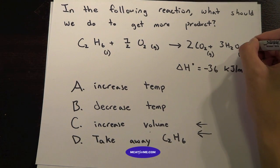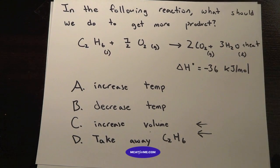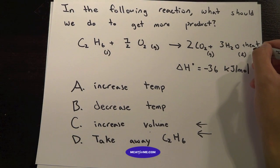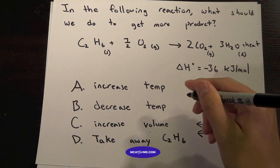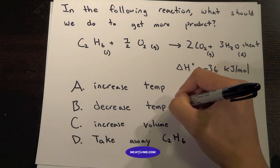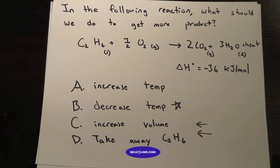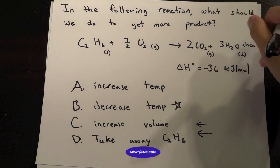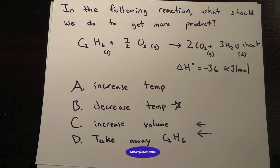We have heat on this side, right? So we have heat on this side. In order to get more products, we will want to do something that reverses the change. So we want to decrease the heat so that they would want to produce more heat. So this is your answer right there. You want to decrease the temperature so that you can reverse that change and you'll produce more product.